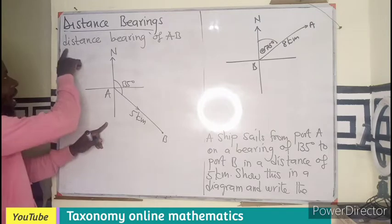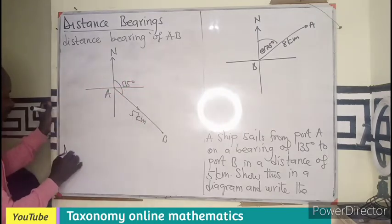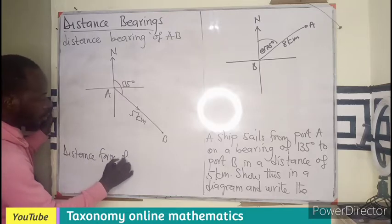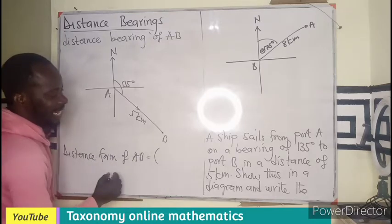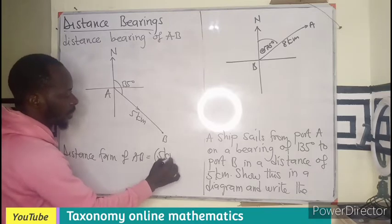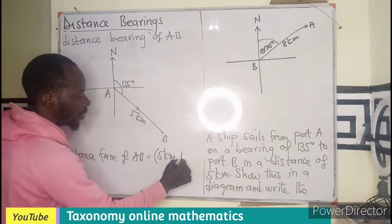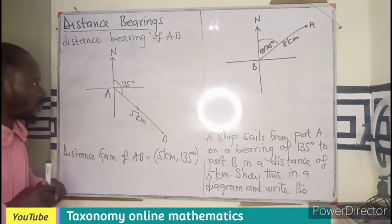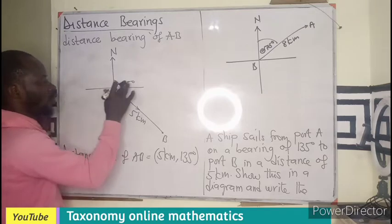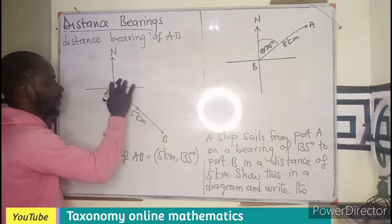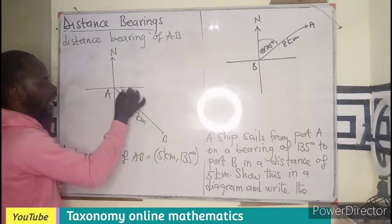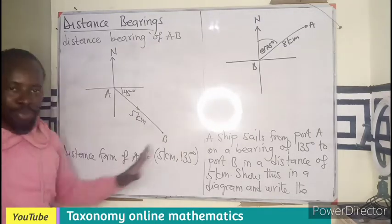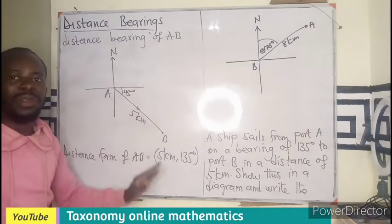We write the distance bearing form: AB equals 5 kilometers, 135 degrees. You can also indicate the 45-degree supplementary angle on the diagram — it is the same thing. This is essentially the distance bearing form: no complex calculation, just identify the distance between the two points and the measurement of the angle.